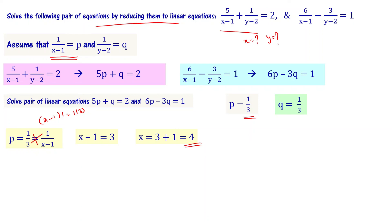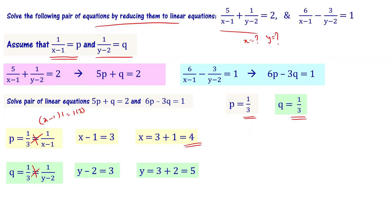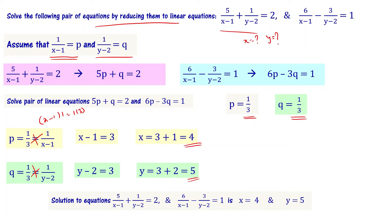Now we find y. Since 1 by (y minus 2) equal to q equal to 1 by 3, by cross multiplication: y minus 2 equal to 3, so y equal to 3 plus 2, that is equal to 5. The solution for this pair of equations is x equal to 4 and y equal to 5.